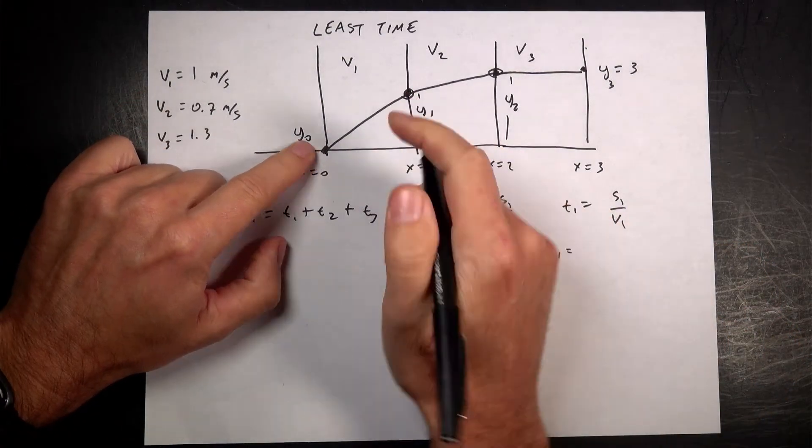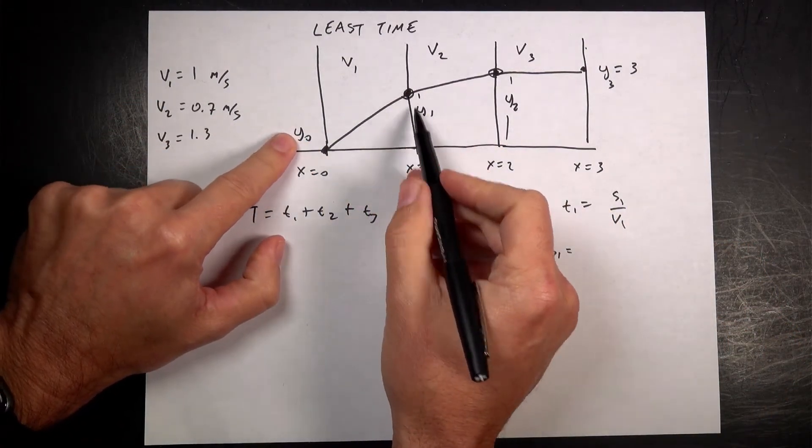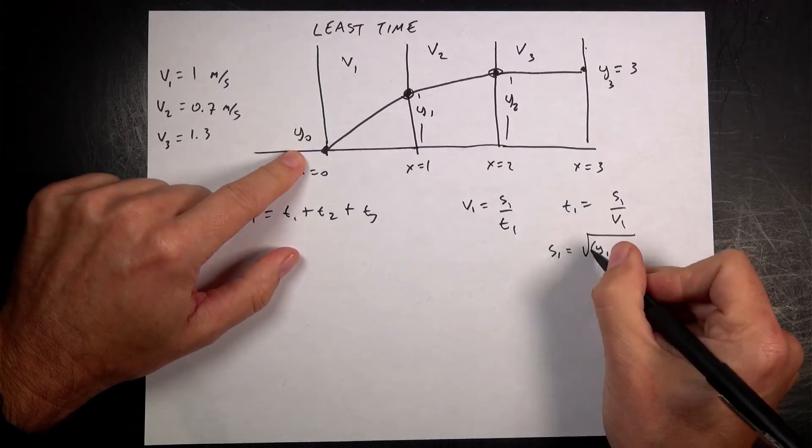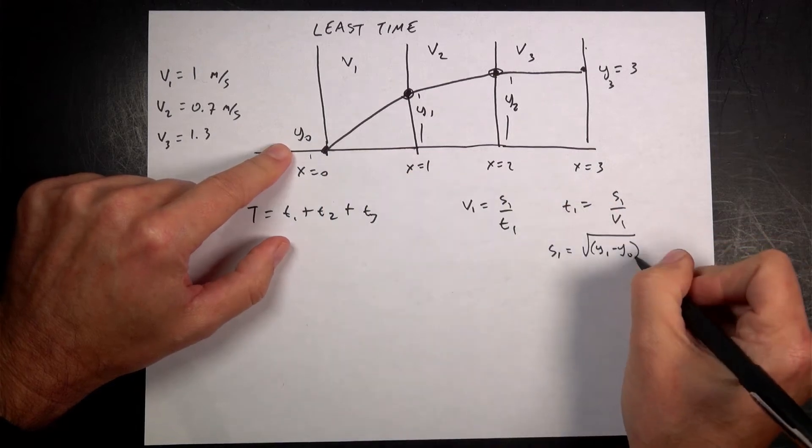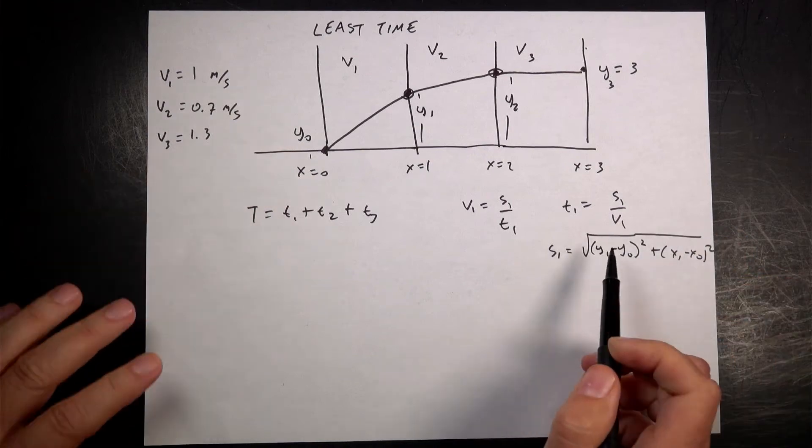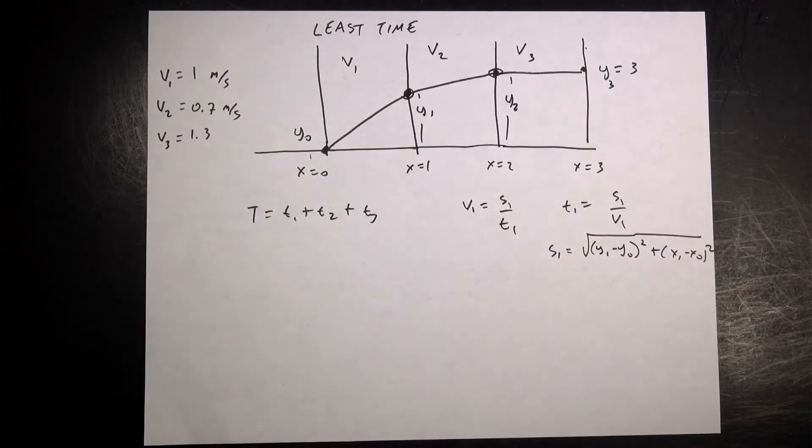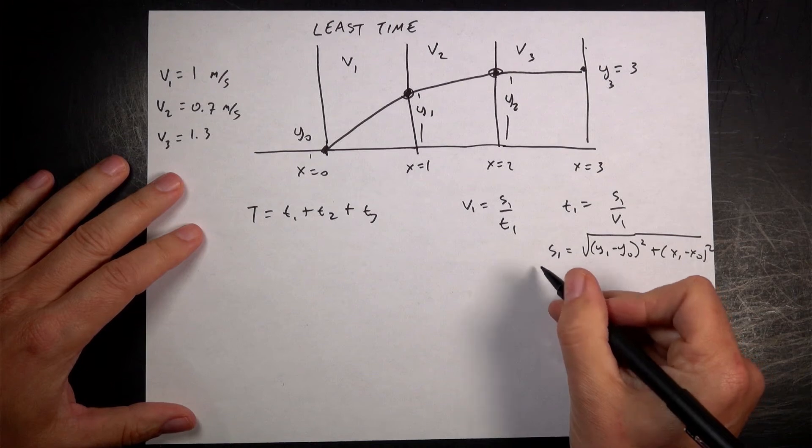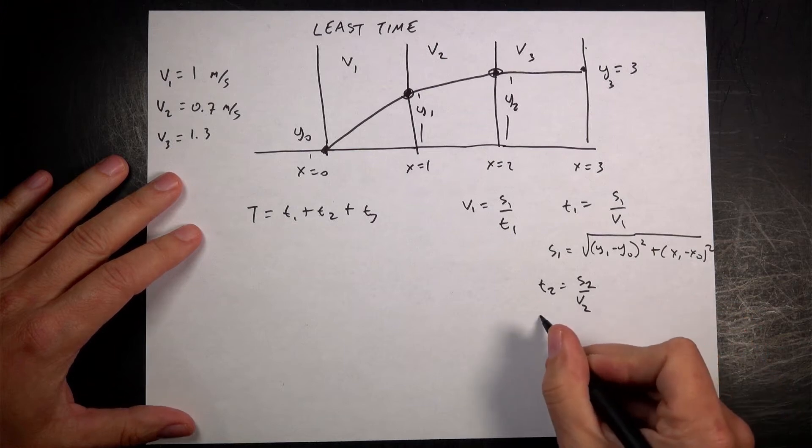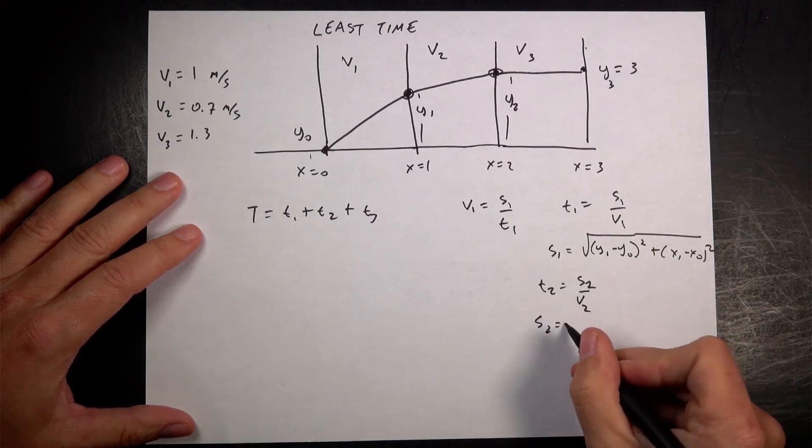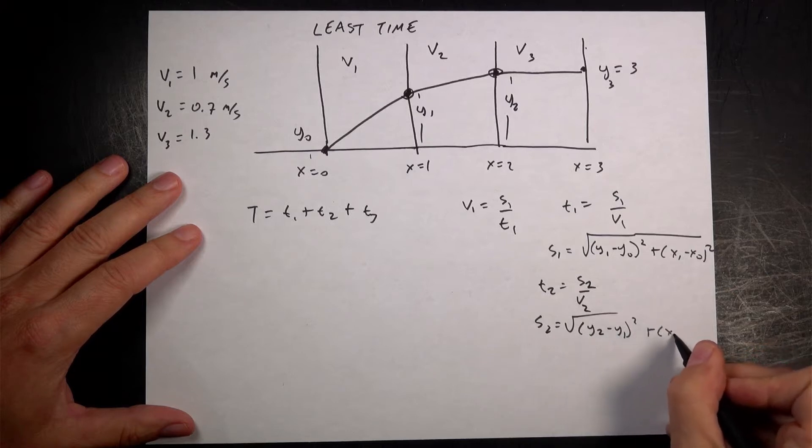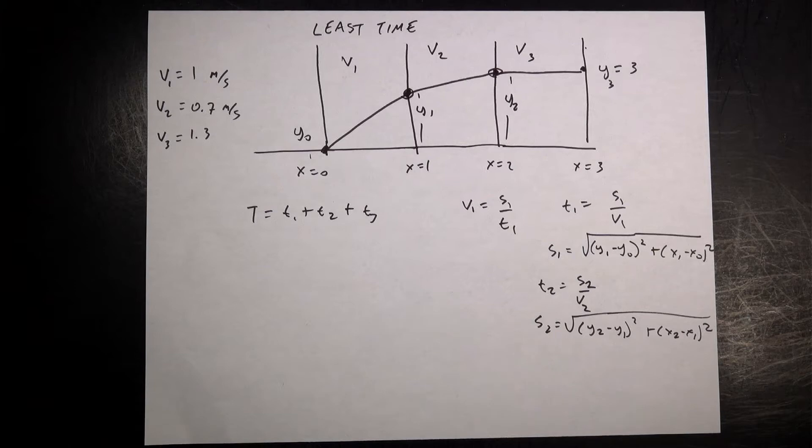S1 is going to be equal to, well, I know the change in X and the change in Y, so I can say this is the square root of Y1 minus Y0, that's Y0 squared, plus X1 minus X0 squared, that's the distance. And that distance is going to change as I move this up and down. And then I can do the same thing for T2. T2 is S2 over V2. And then S2 is going to be the square root of Y2 minus Y1 squared, plus X2 minus X1 squared. So I can find all that stuff. I can calculate the time.